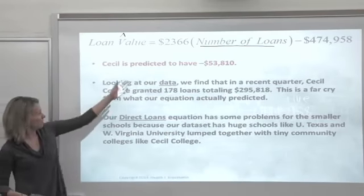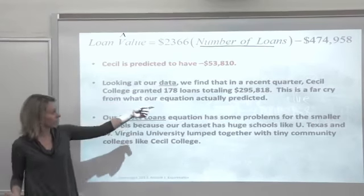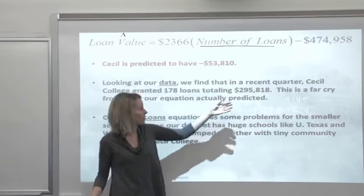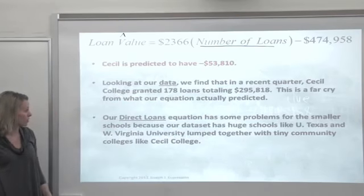Cecil's predicted to have a negative loan value. Looking at our data, you could actually see the actual value was $295,000, very far from the negative $53,000 predicted by the equation.